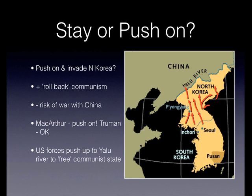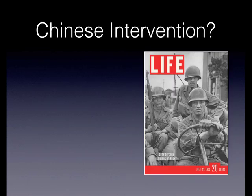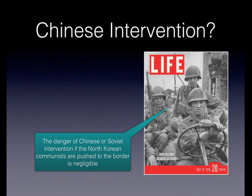UN and South Korean forces pushed right up to the Yalu River — right to the border with China. MacArthur's position, shared by many in the US, was that the danger of Chinese or Soviet intervention if the North Korean communists were pushed back to the border was negligible. The Chinese had only recently accomplished their communist takeover, and the US advantage in air and naval support meant the Chinese would not risk war.